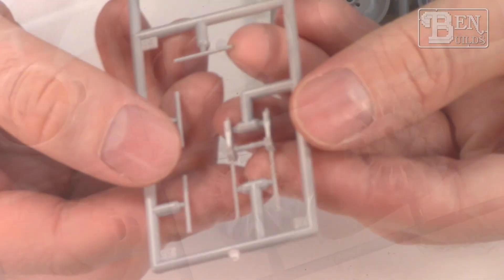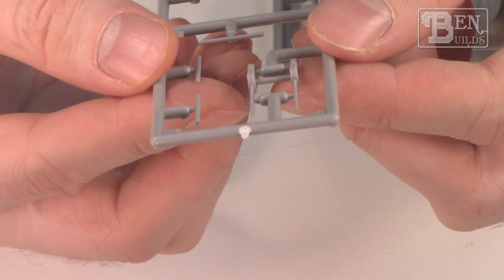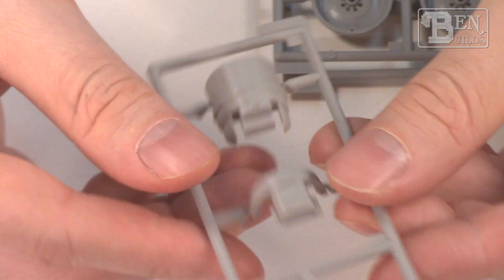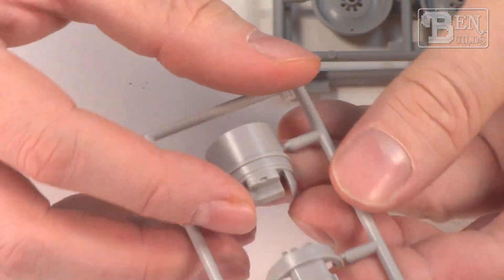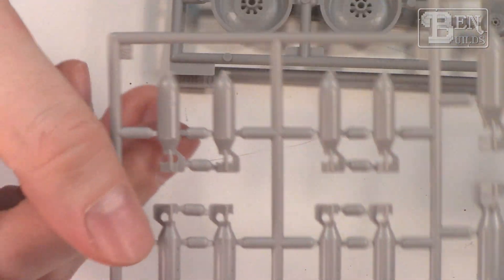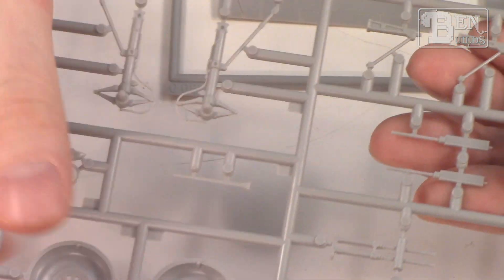We have the armament here, our machine guns for the top turret, the twin 50 cals. They are very nicely molded with little air vents in there as well. Then we have the bottom of the turret, so that's going to be a pretty simple assembly though I might want to detail that up just a little bit more. Bombs are pretty simple, pretty easy affair, nothing too crazy about that.